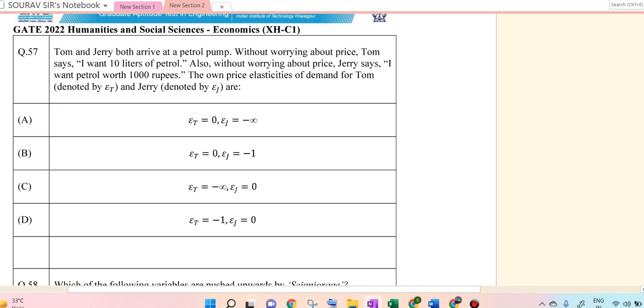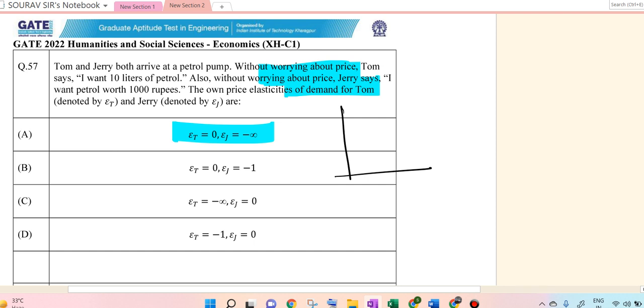Tom and Jerry both arrive at a petrol pump without worrying about the price. Tom says, I want 10 liters of petrol. Jerry says, I want the petrol worth rupees 1000. Now, the own price elasticity of Tom and Jerry.